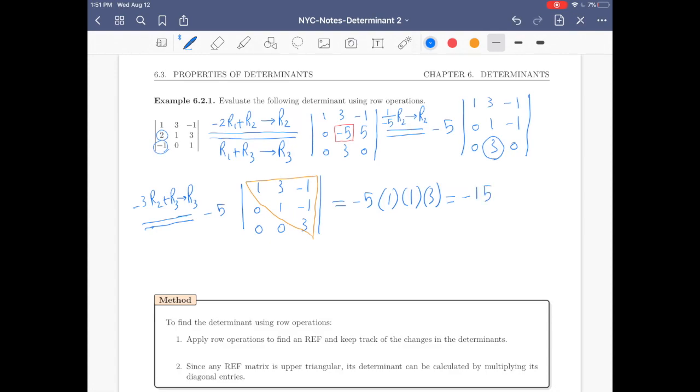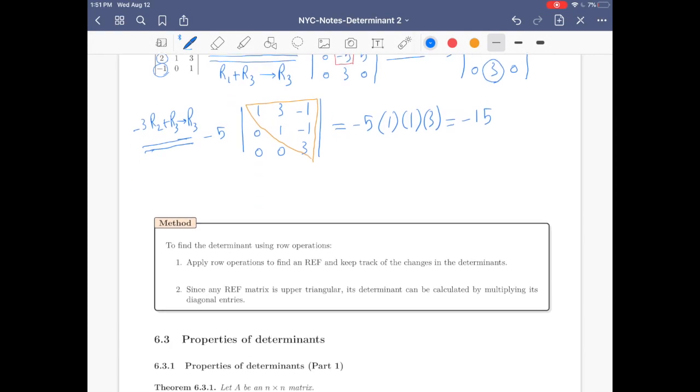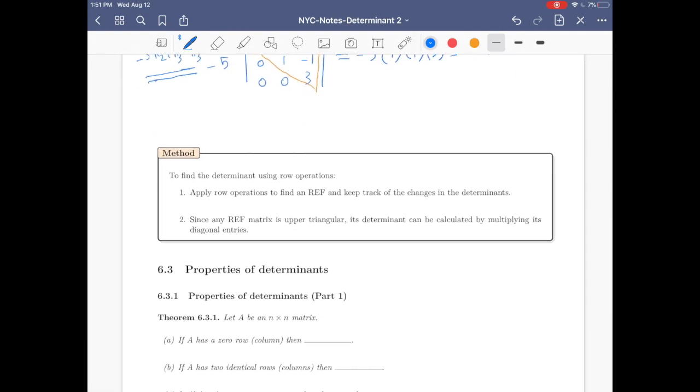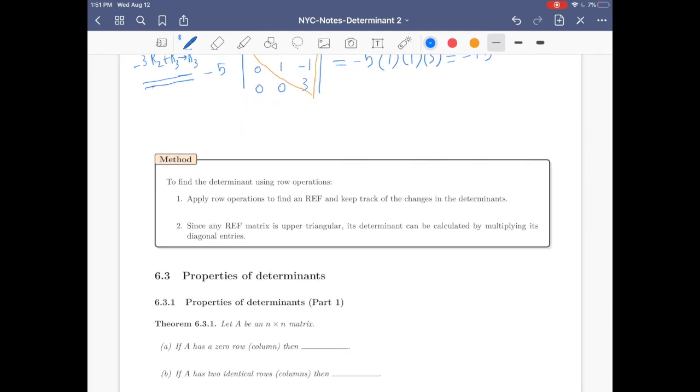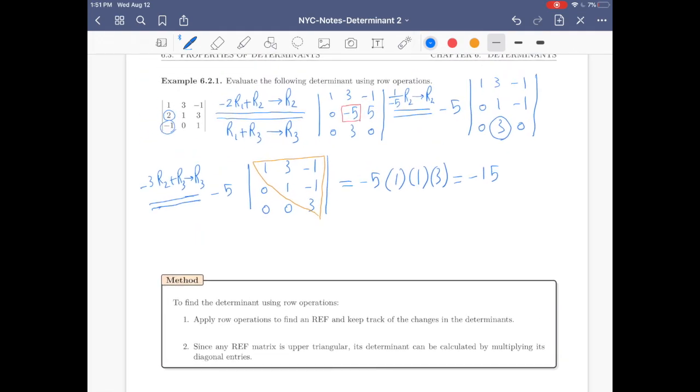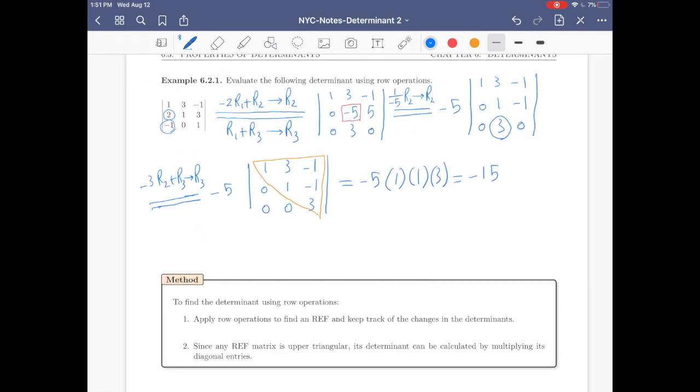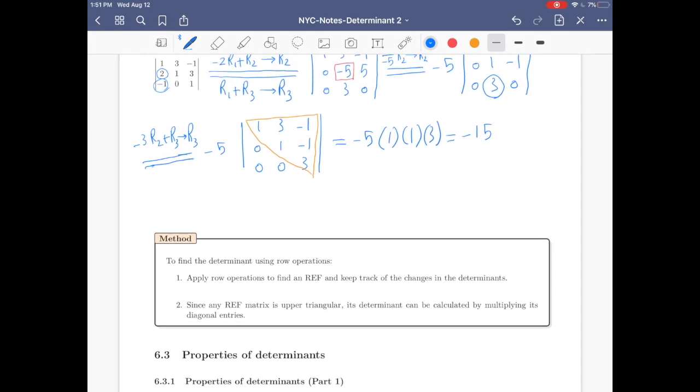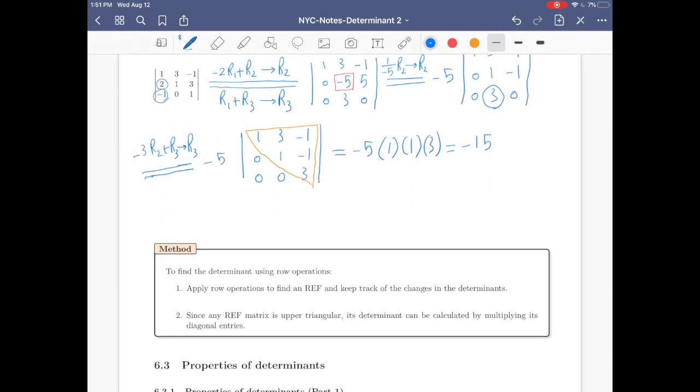This is kind of the third method, at least only for 3 by 3 matrices, but for general case, the second method. You can either do the cofactor expansion along a row or column, or you can do a row operation. But you have to be careful by keeping the track of the changes.